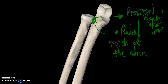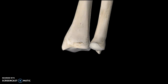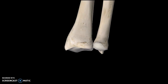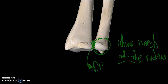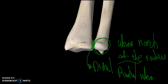For the lower structure, it's the exact opposite. The way I like to memorize them: the smaller structure is named as part of the bigger structure. So at the bottom, the ulna is smaller, so it's the ulnar notch of the radius. The joint itself is called the distal radioulnar joint.